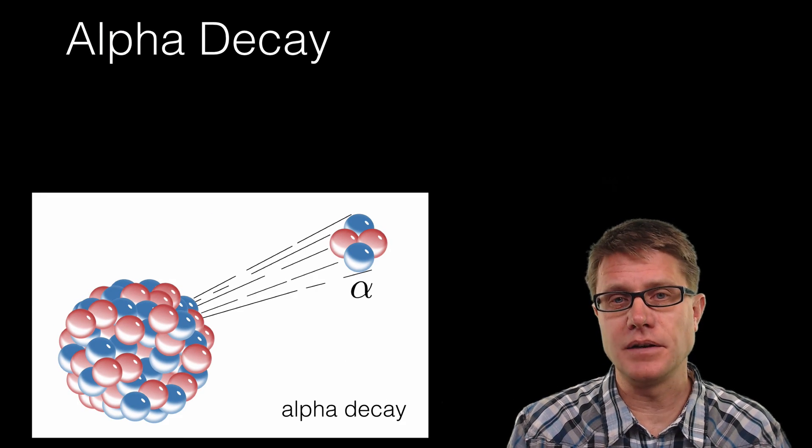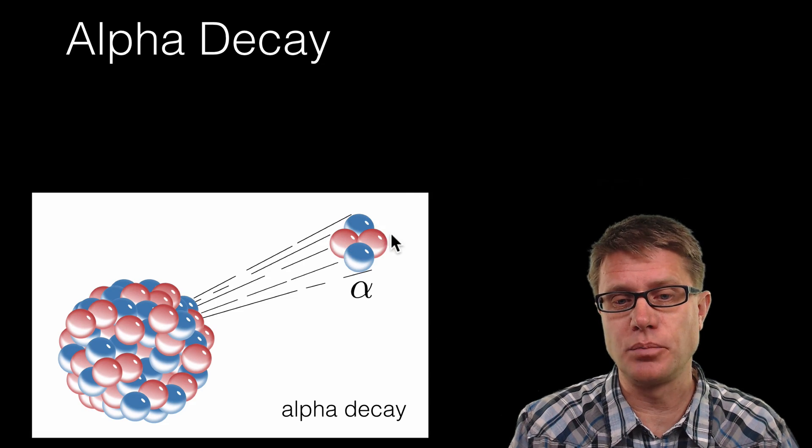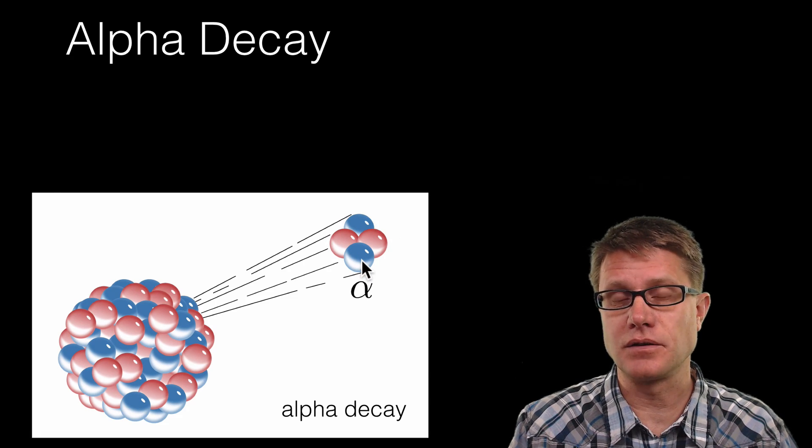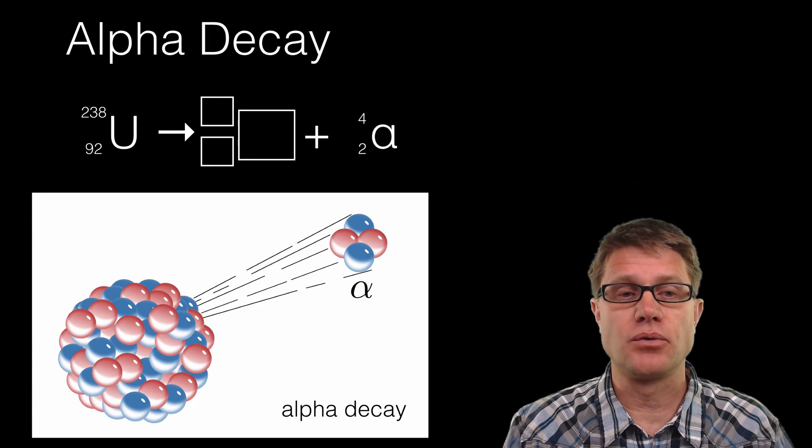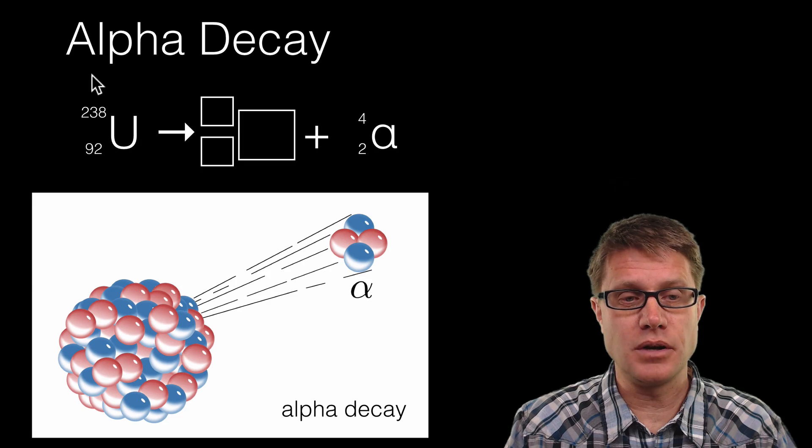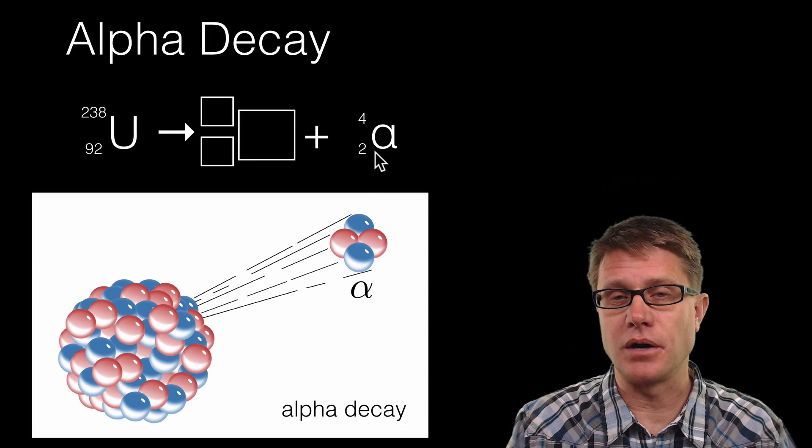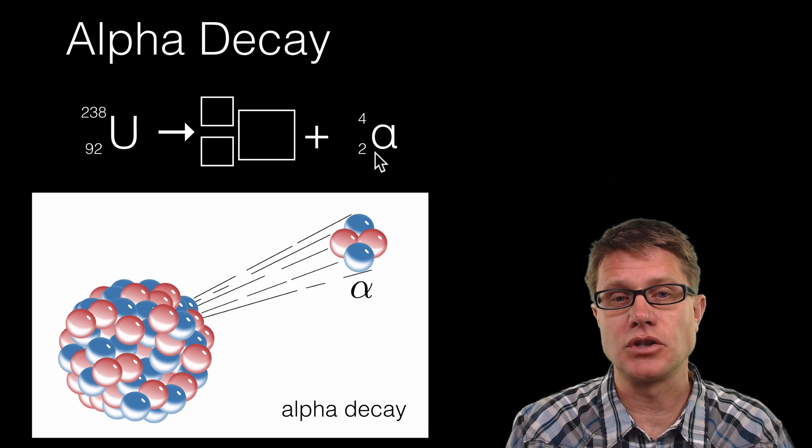But if we look at alpha decay, alpha decay you are giving off an alpha particle. An alpha particle is two protons and two neutrons. So we do not have the electrons. So if we were to look at decay of uranium 238, what I have done is I have written uranium 238 over here. This is our alpha particle. But what we are going to try to do is using the conservation of nucleon number and charge, let's figure out what we are left with after that decay.